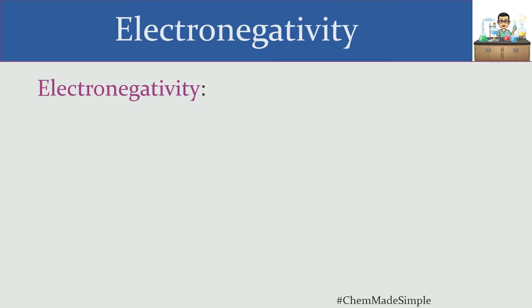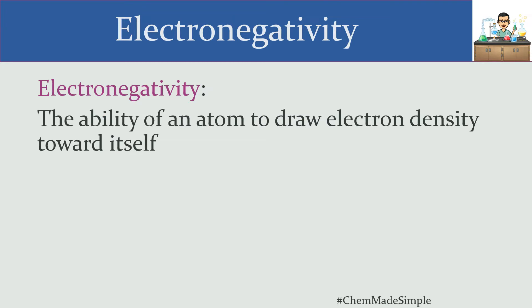Welcome to today's episode of the ChemOG. Today we're talking about a rather important chemistry topic, and that is electronegativity. Electronegativity is the ability of an atom to draw electron density toward itself — so how capable is the atom, or element, at being able to attract electrons that happen to be around?